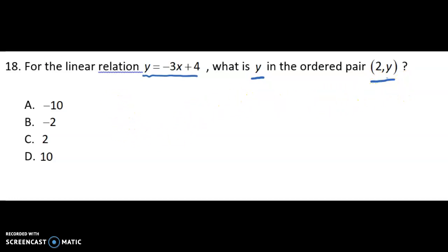So let's start by rewriting our linear relation here. y equals negative 3x plus 4. And we'll rewrite our ordered pair here as well. So we have 2 comma y. Now remember that that 2 is actually a value for x.